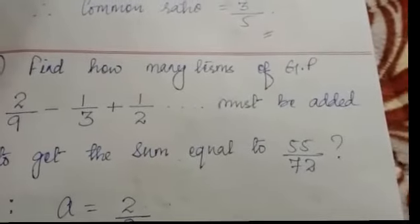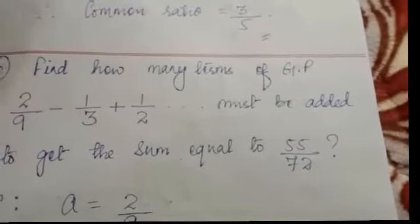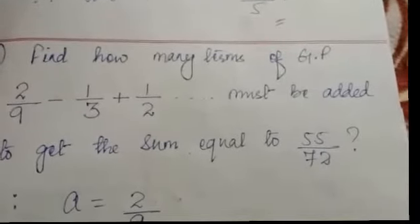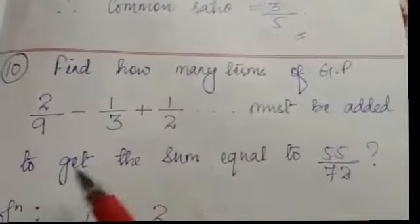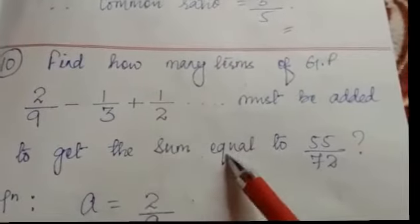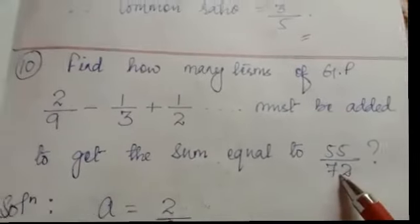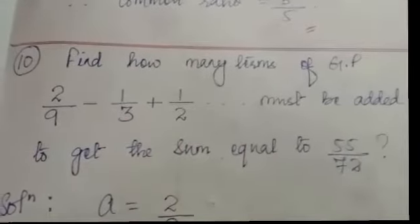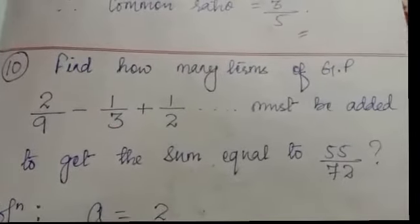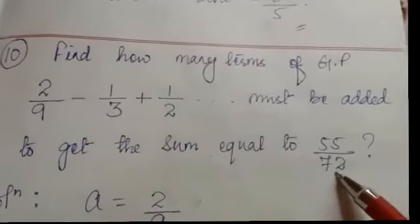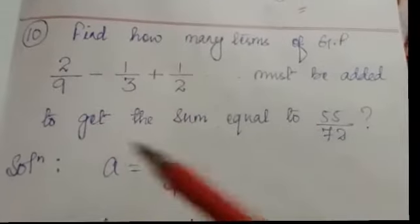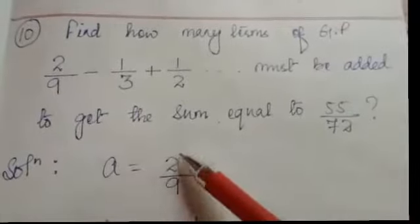Good morning class 10. In our last class we solved till question number 9, so today we'll start from question number 10: find how many terms of a GP must be added to get the sum equal to 55 by 72. The first term, second term, and third term are given. The value of a (first term) is 2 by 9.